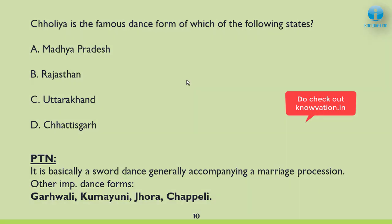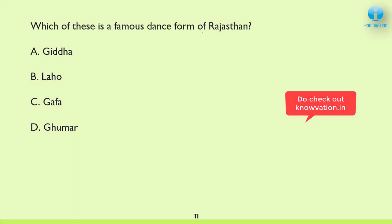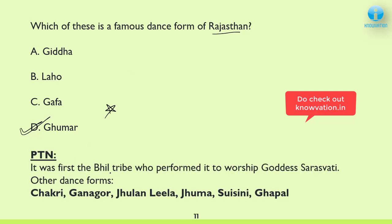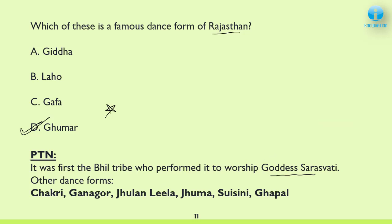Next: Which of the following is the famous dance form of Rajasthan? The correct answer is D — Ghoomer. This is a no-brainer. Other important dance forms of Rajasthan are Chakri, Ganagor, Jhulan Lila, Jhuma, Sui Sini, and Ghaapal.